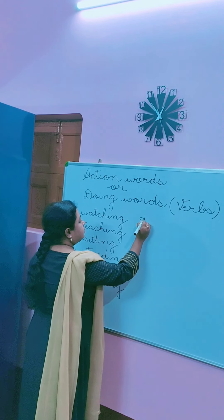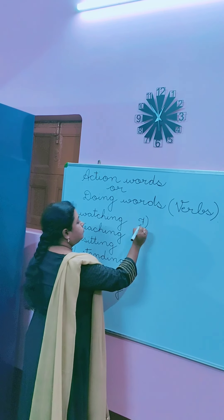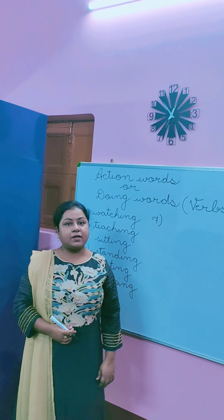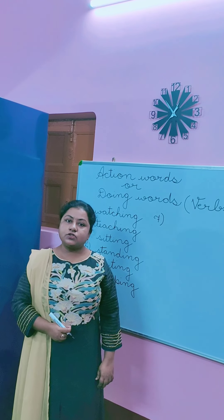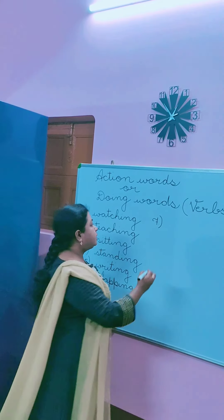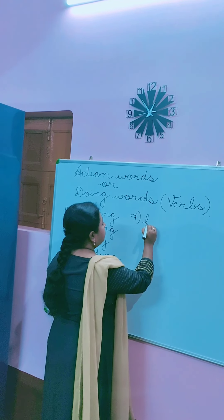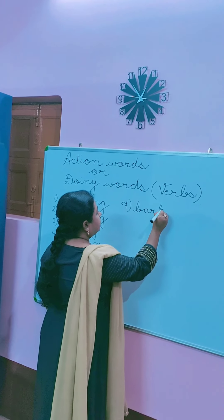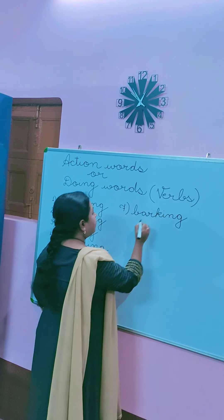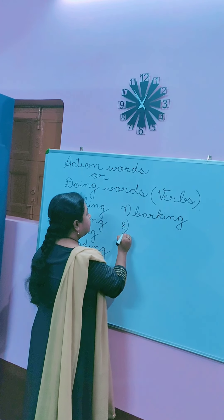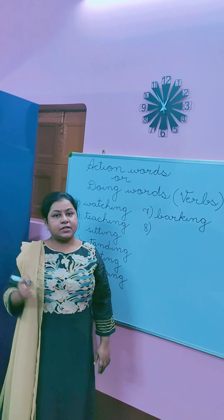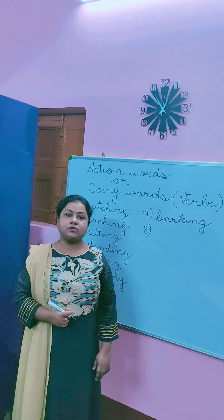Similarly, children, there are many more action words. For example, a dog starts barking. So what action is the dog doing? The dog is barking. So barking is also an action word — B-A-R-K-I-N-G. This action is performed by an animal.